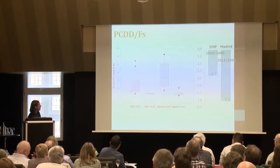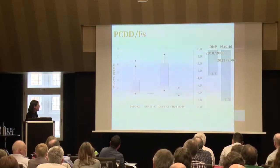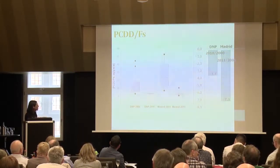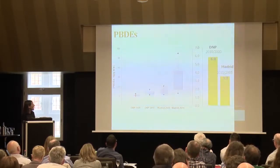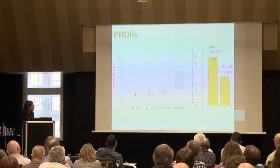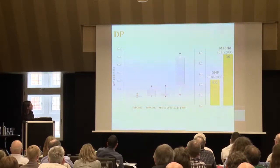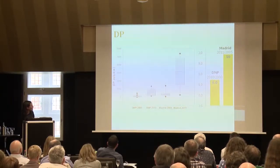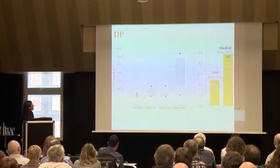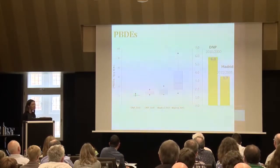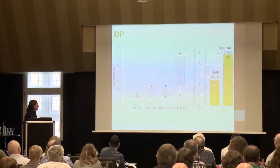For dioxins and furans, we again have good news: levels are decreasing, and both in Doñana National Park and Madrid, median levels are very low. However, for PBDEs we find the contrasting situation — levels are increasing in both Doñana National Park and Madrid. We find the same increasing pattern for dechloranes. In the case of PBDEs this may be expected given recent regulatory timelines, and for dechloranes we are still looking for some kind of regulation.